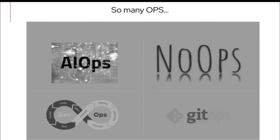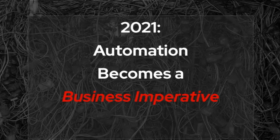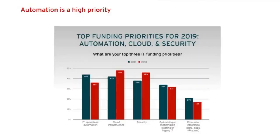With this backdrop in mind, it's not surprising that automation has become a business imperative. It's no longer a side project or a bunch of scripts that a small team is responsible for, but organizations are looking for a platform that can support multiple automation journeys across their different teams. You can see this being reflected in the budget and spend of different organizations. This chart shows that IT automation spend increased from 2018 to 2019, and more significantly, in 2019, IT automation had the highest priority spend for organizations.